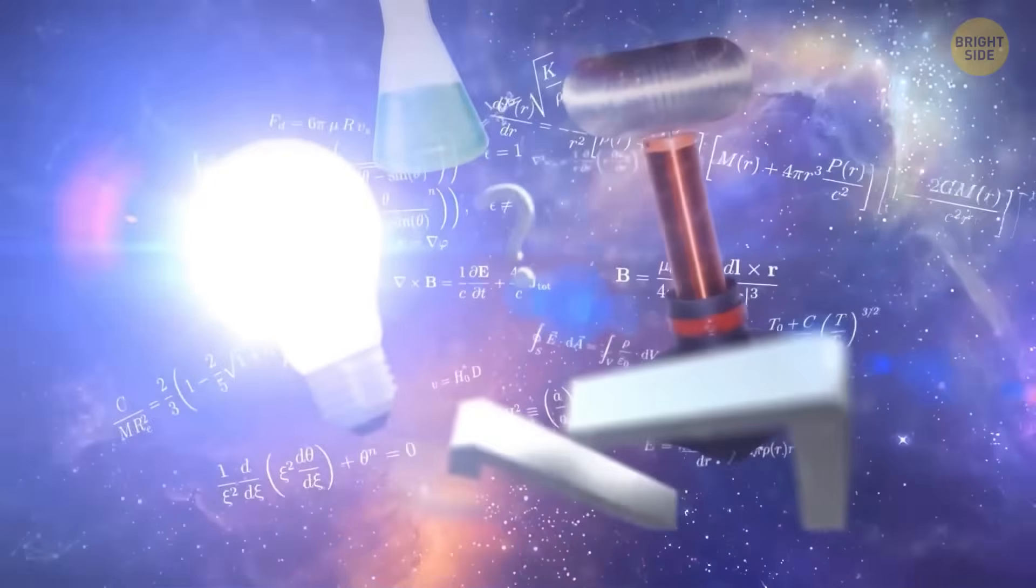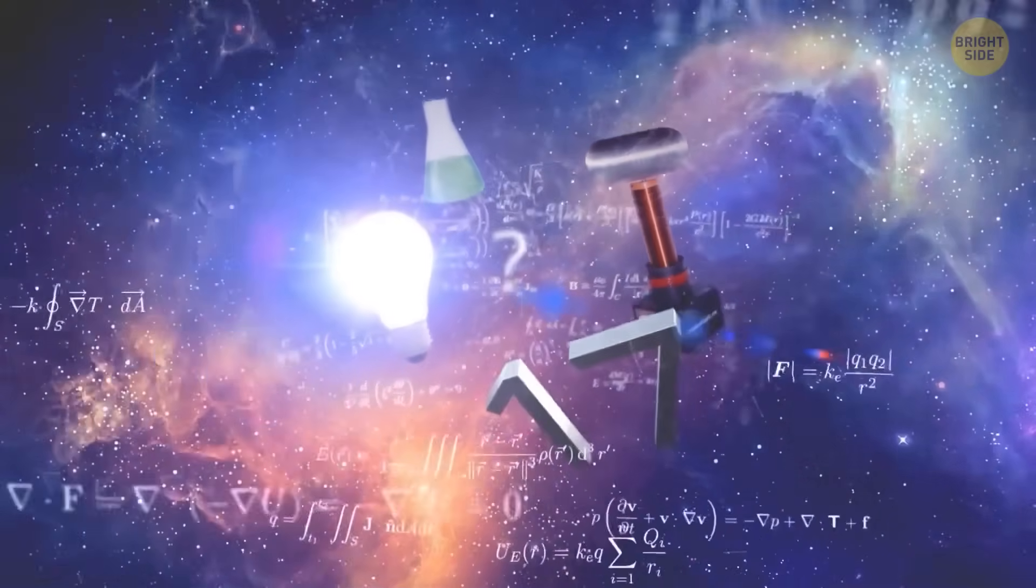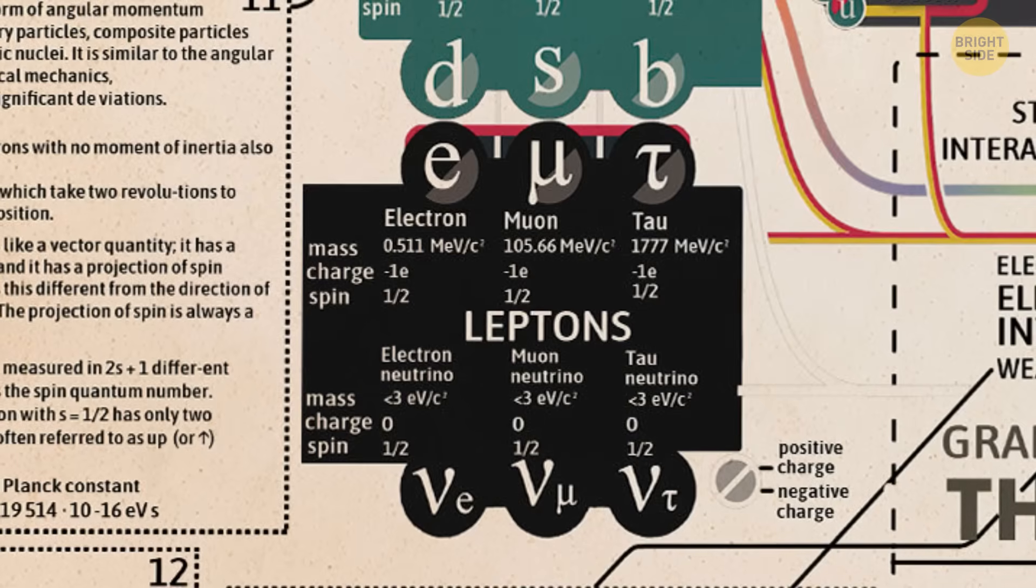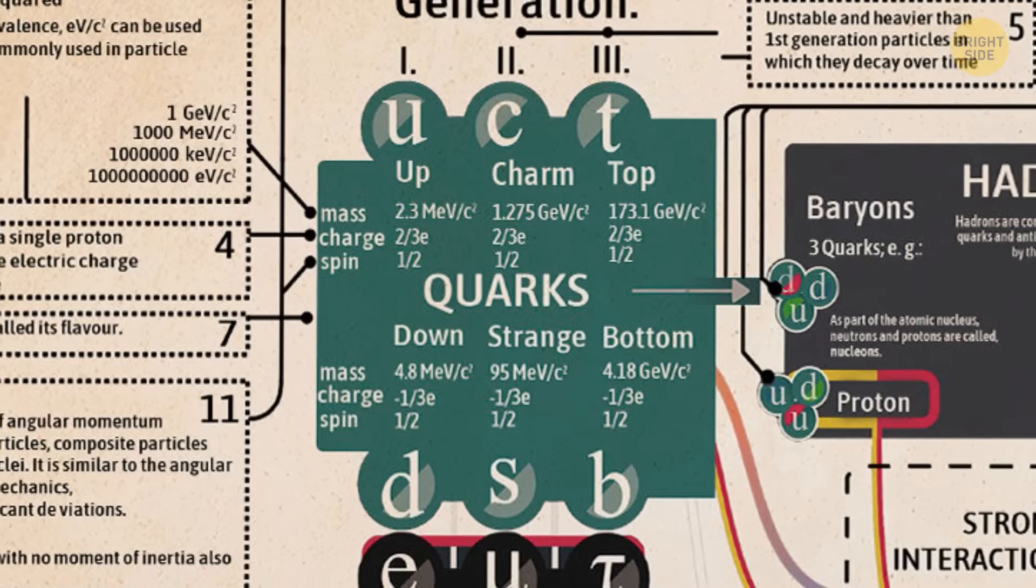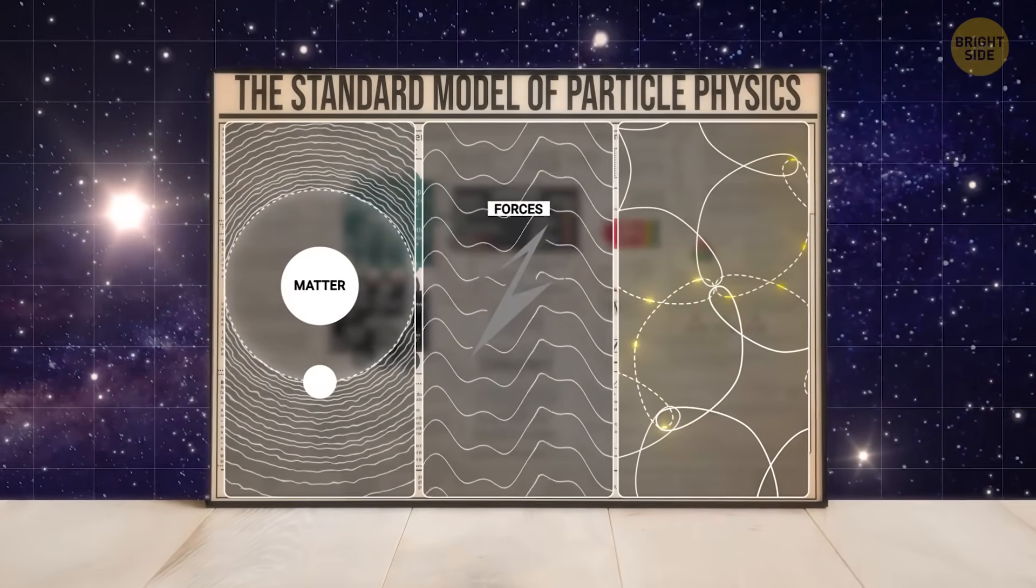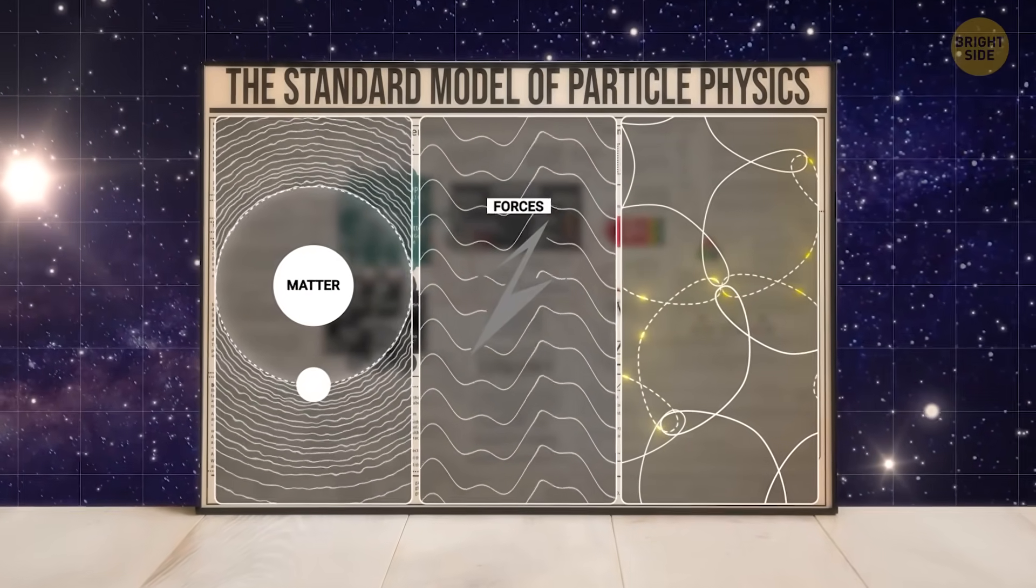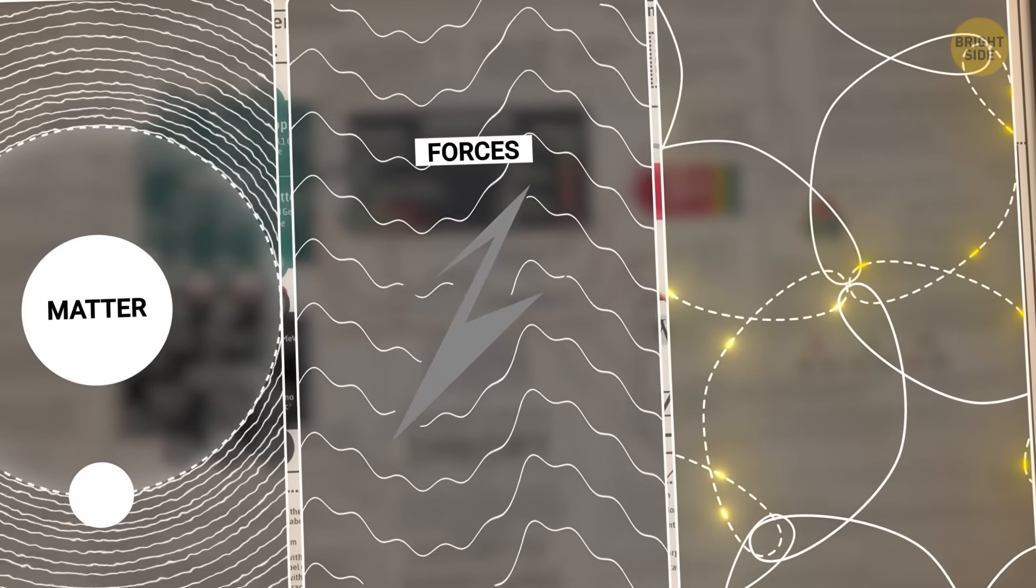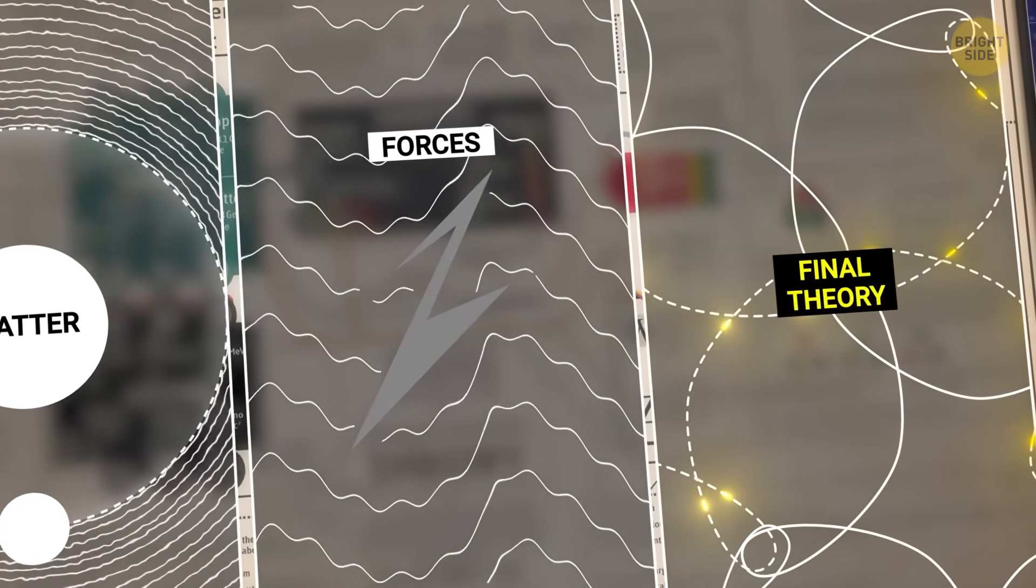Now, the thing is, our current understanding of the universe is based on the standard model of particle physics. And it has been incredibly successful in explaining how particles and forces interact. But the standard model has gaps. It doesn't explain dark matter, dark energy, or why the universe is made mostly of matter instead of antimatter.